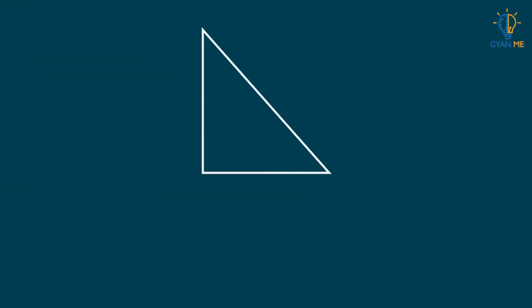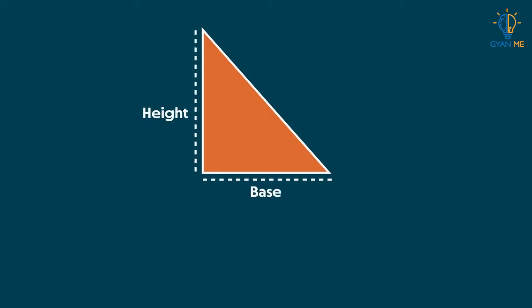Sometimes we need to find the area of a triangle. For example, if we are given the measurements of the base and height of a triangle, you can compute its area by using the formula: half the product of its base and height.